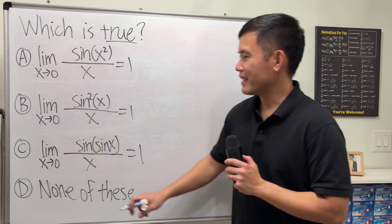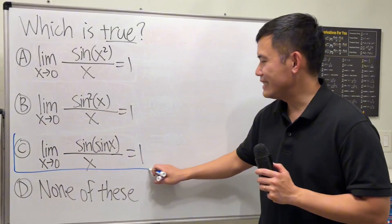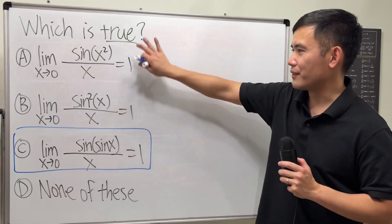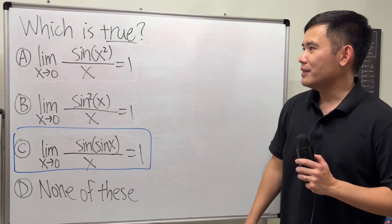Done? Okay, here's the deal. The answer is C. This is correct. None of these. So how do we do it all?